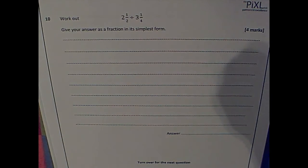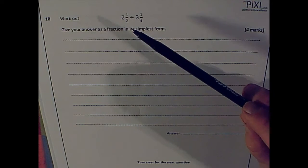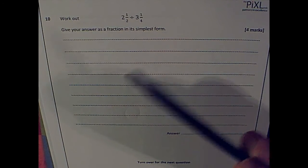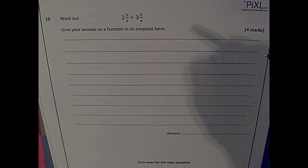Question 10. Work out two and a half divided by three and a quarter. Give your answer as a fraction in its simplest form, four marks.